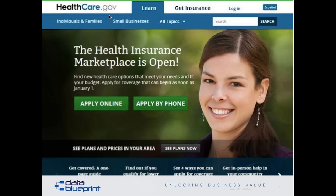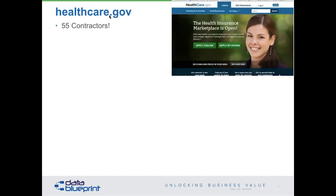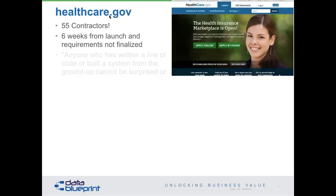Some of you remember healthcare.gov. There's no way anyone in data governance would allow 55 contracting organizations to work on the same project — we started with divide and conquer, now we're talking about too many cooks spoiling the broth. With 55 contracting organizations, each is most interested in maximizing revenue to their individual organization. How many of you would let an IT project start if, six weeks before launch on two years of development work, they hadn't finalized the requirements? They hadn't finalized requirements six weeks before they launched. And of course we would never turn it on with a big bang — turning on all 350 million Americans at the same time. You start in Virginia, get Virginia online, then add Maryland.